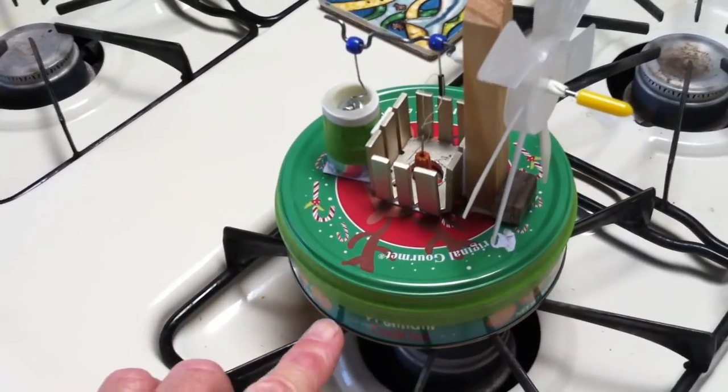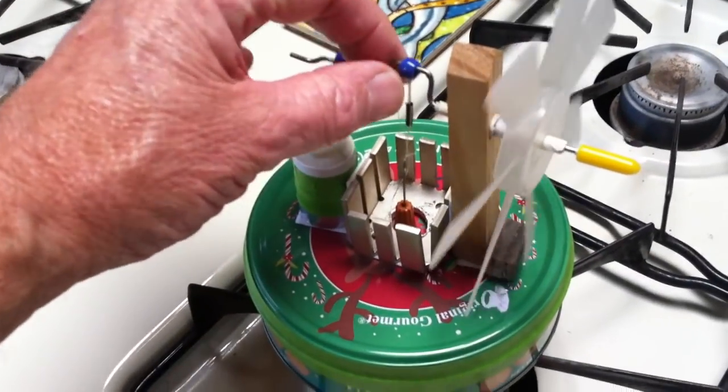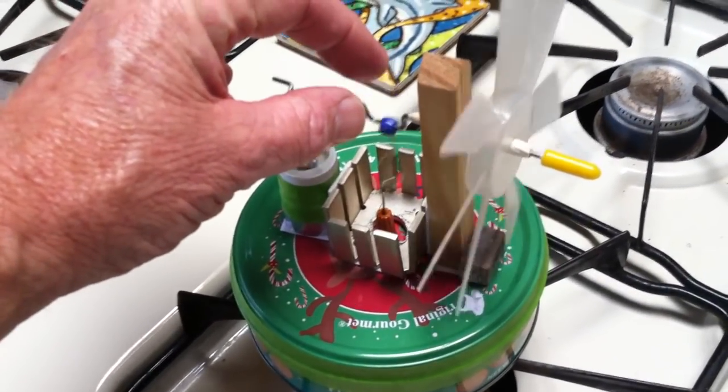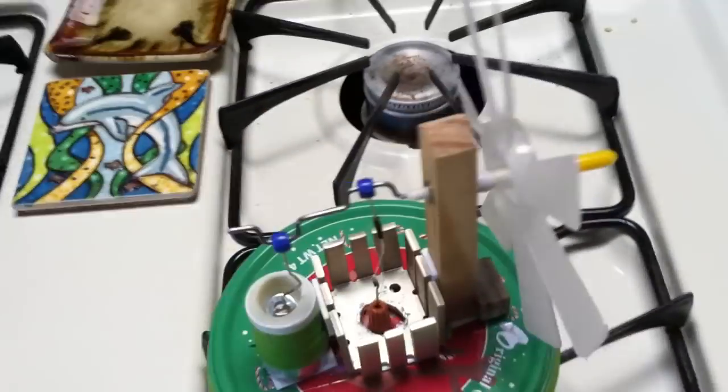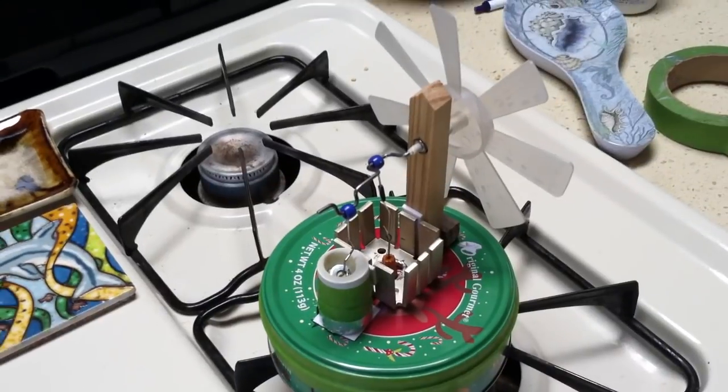By the way the displacer, that foam sponge displacer is all melted inside there. But the thing still works. I was real surprised. Anyway that's a fan Stirling engine, a Stirling engine fan.